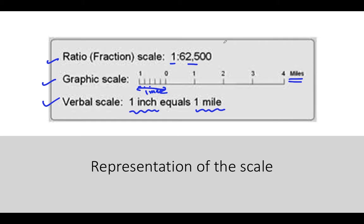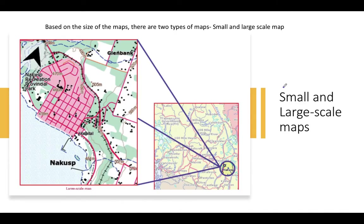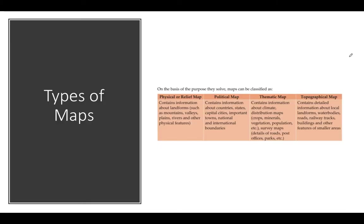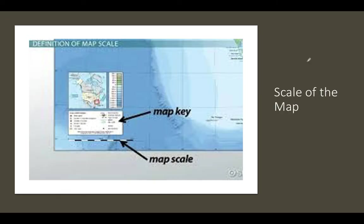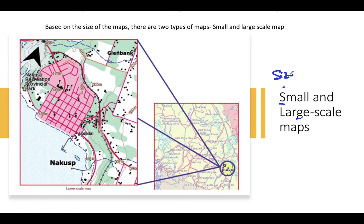On the basis of purpose, maps are divided into four types. On the basis of size, maps are divided into two more parts: small scale map and large scale map. A small scale map is one where the information shown is very small or limited — for example, on a map of India, you can see a small city, so the information is very small.